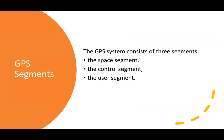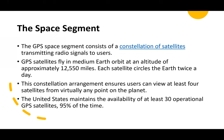GPS has three different segments: the space segment, the control segment, and the user segment. The GPS space segment consists of a constellation of satellites transmitting radio signals to users. They fly in medium Earth orbit at an altitude of approximately 12,500 miles. Each satellite circles the Earth twice a day, and the constellation ensures that users can view at least four satellites from virtually any point on the planet. The U.S. maintains at least 30 operational GPS satellites 95% of the time.